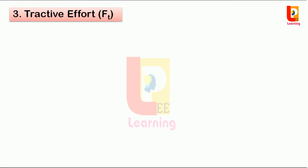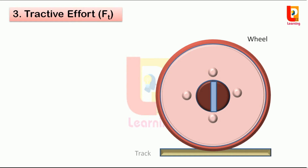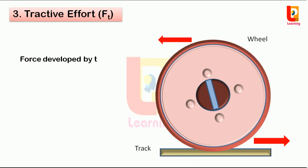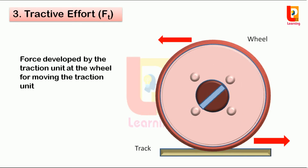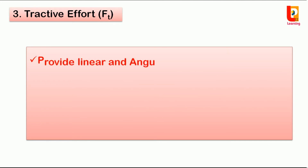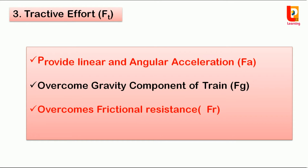Tractive effort, denoted by FT, is the force required to haul a load, or the force developed by the traction unit at the wheel for moving the traction unit. Tractive effort exerted by the traction unit performs the following functions: first, it provides the necessary linear and angular acceleration to the train mass; second, it overcomes the gravity components of the weight of the train; it overcomes wind and frictional resistance of the train; and it overcomes curve resistance.